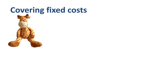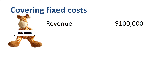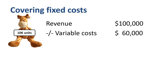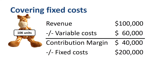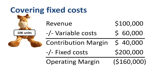Let's 10x this business — we produce and sell 10,000 units. Revenue will be $100,000, variable cost $60,000, and contribution margin $40,000. We have $40,000 of contribution margin available to cover fixed costs. Unfortunately, the fixed costs are $200,000, so $160,000 of fixed costs are not covered. The company makes a loss at the operating margin level of $160,000.